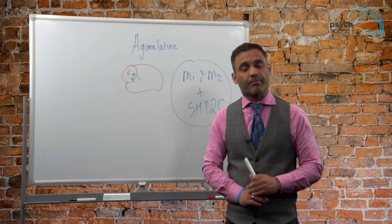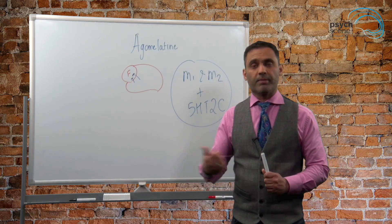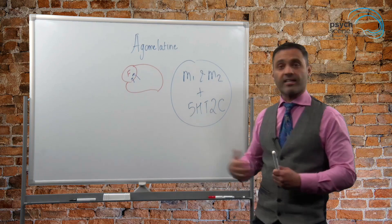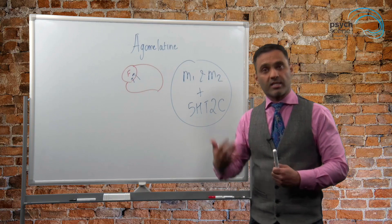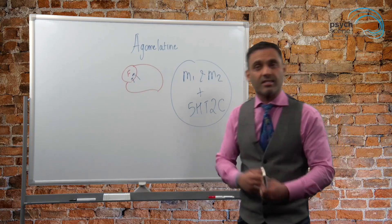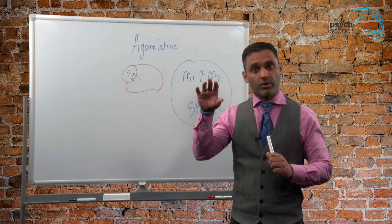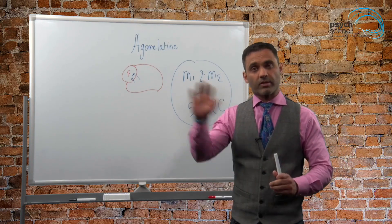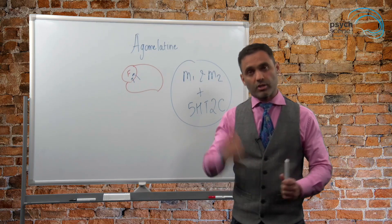But in terms of its tolerability profile, it does not lead to sexual dysfunction because it actually antagonizes that receptor. You see, SSRIs activate this receptor. SNRIs activate this receptor and can lead to sexual dysfunction. This one blocks it, so it not only can be used as a treatment for sexual dysfunction from other antidepressants, but on its own it does not lead to sexual dysfunction.